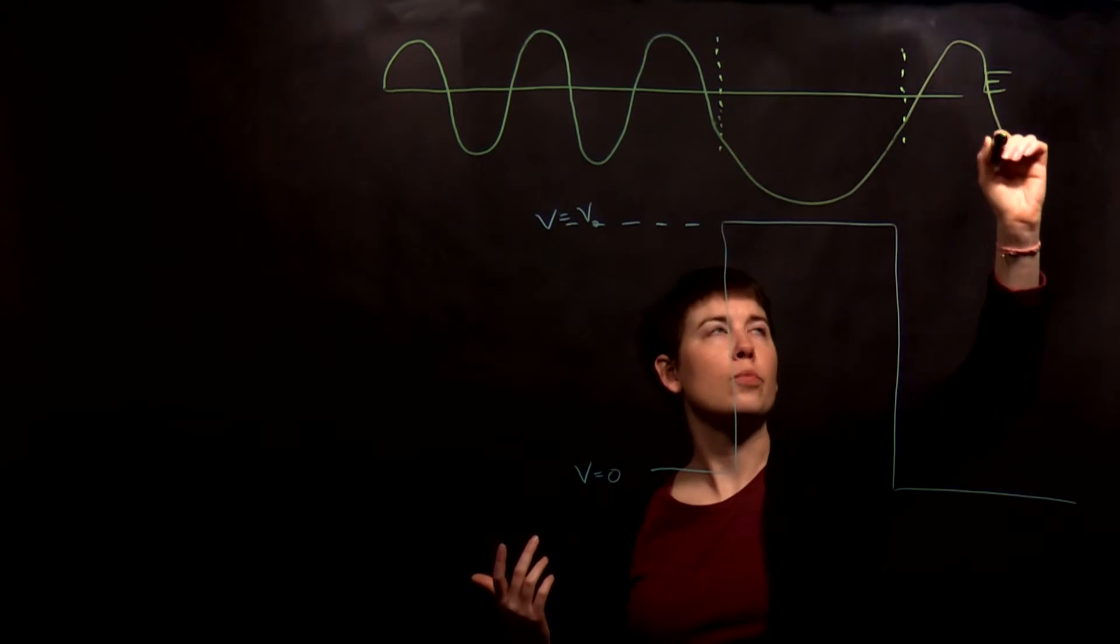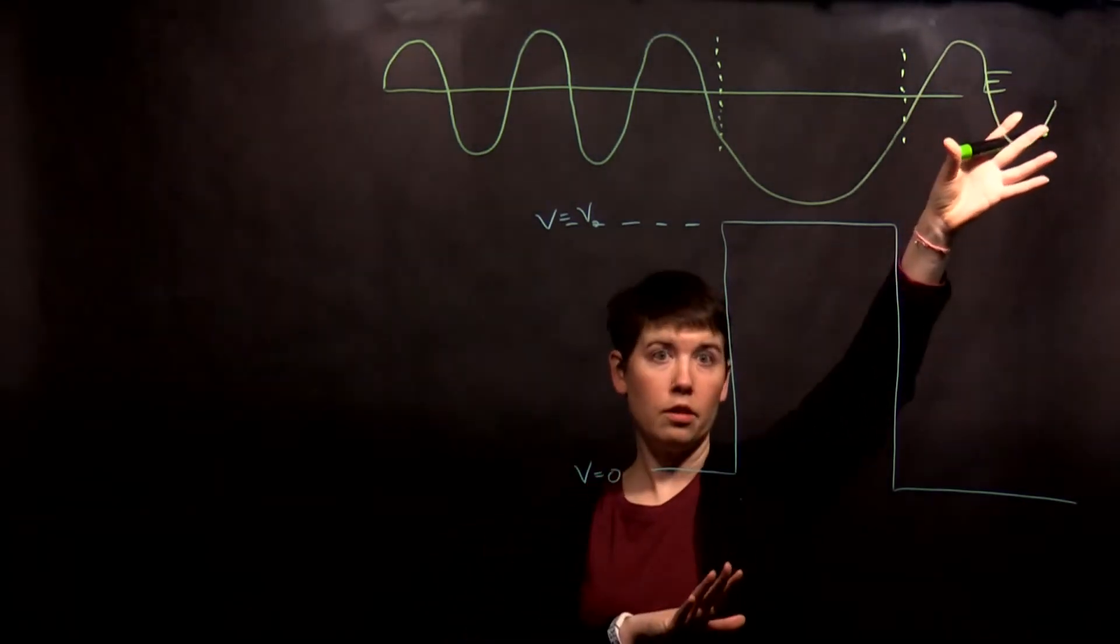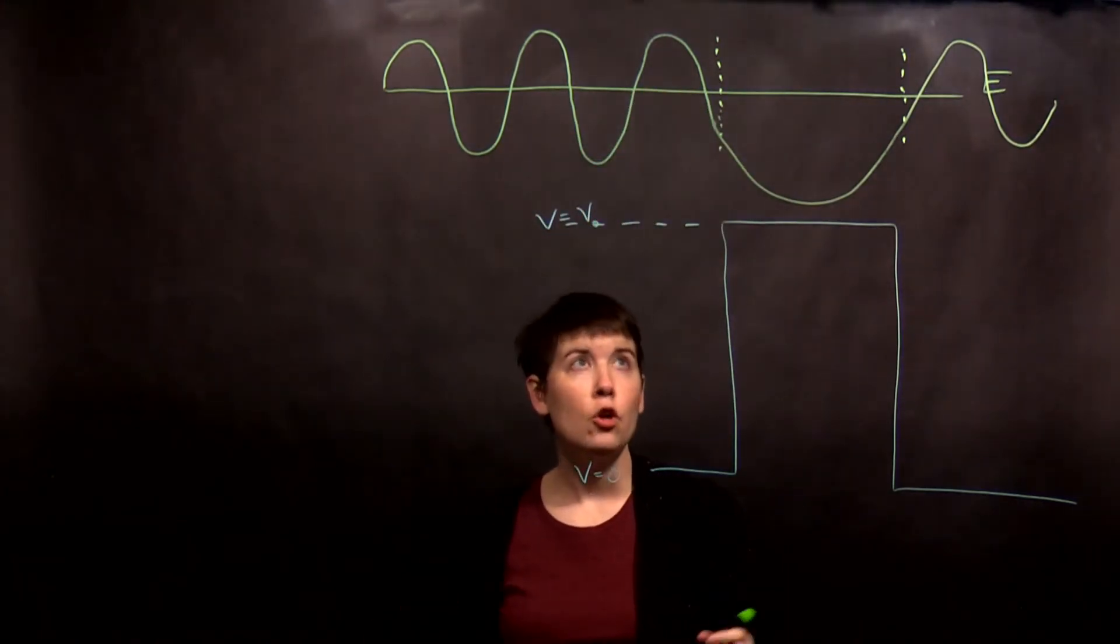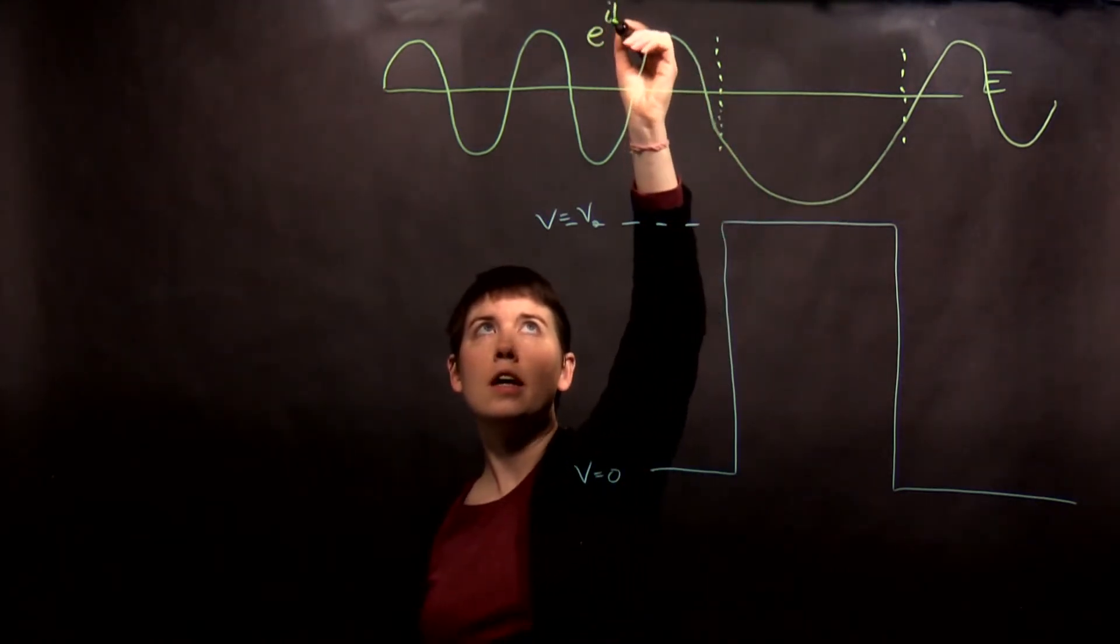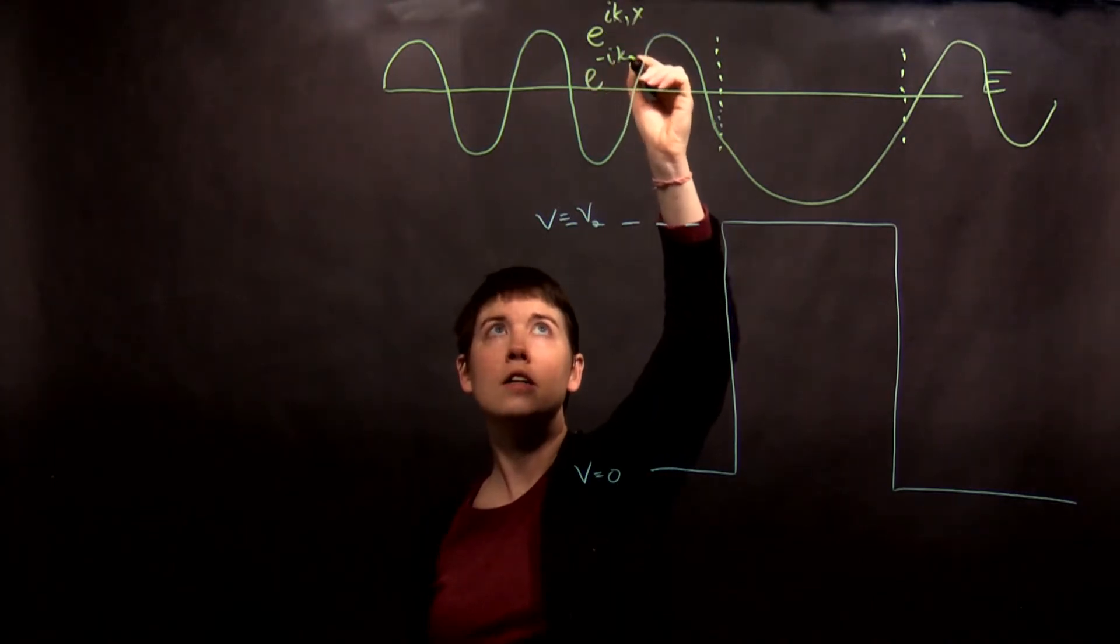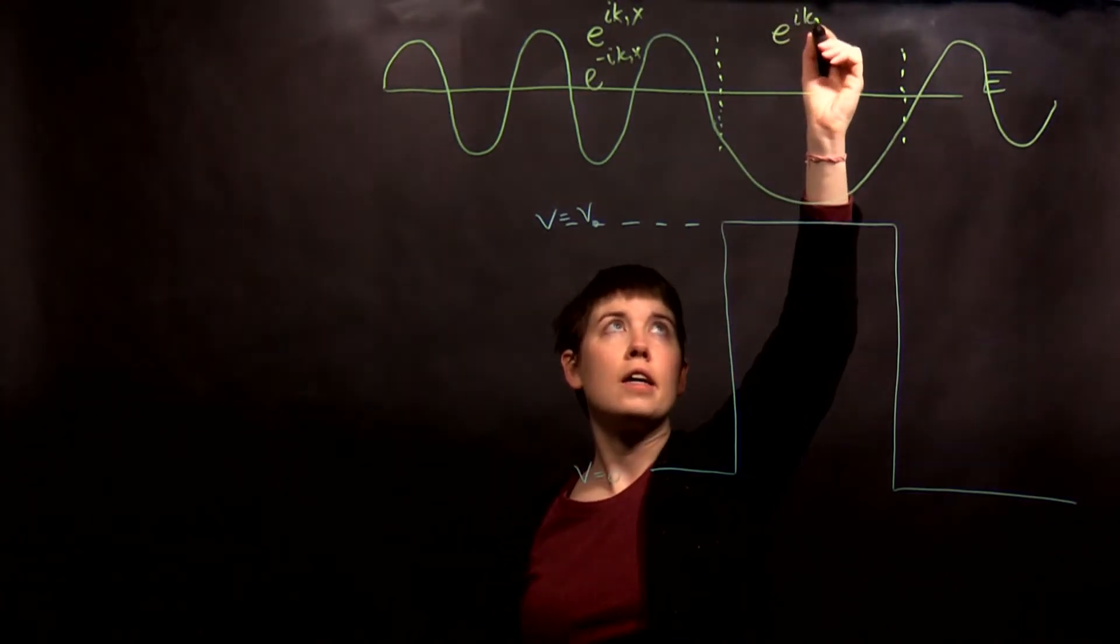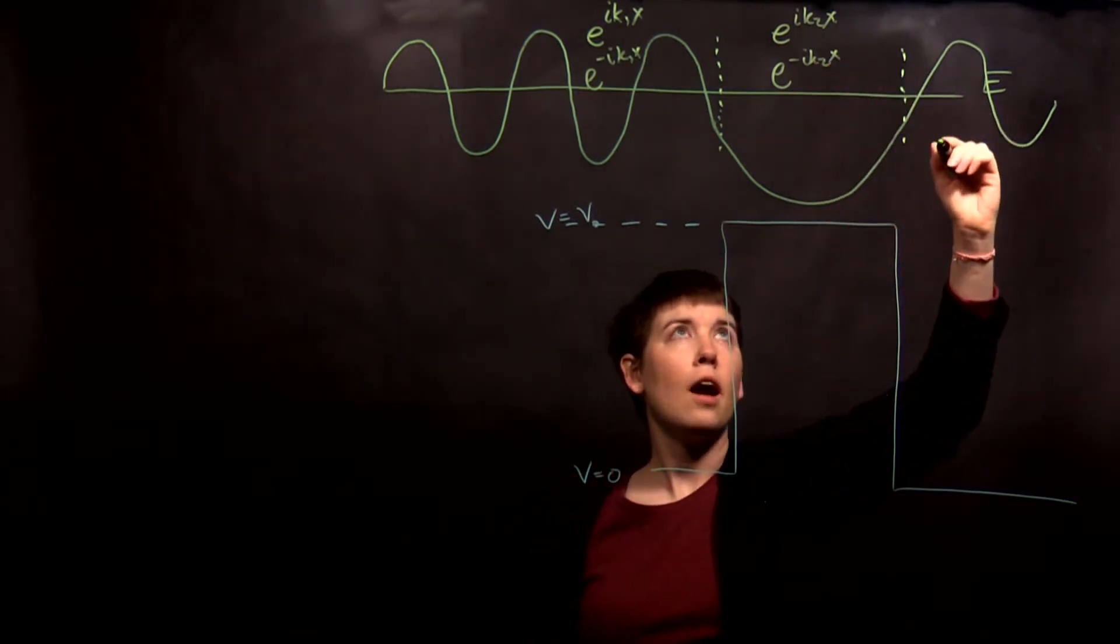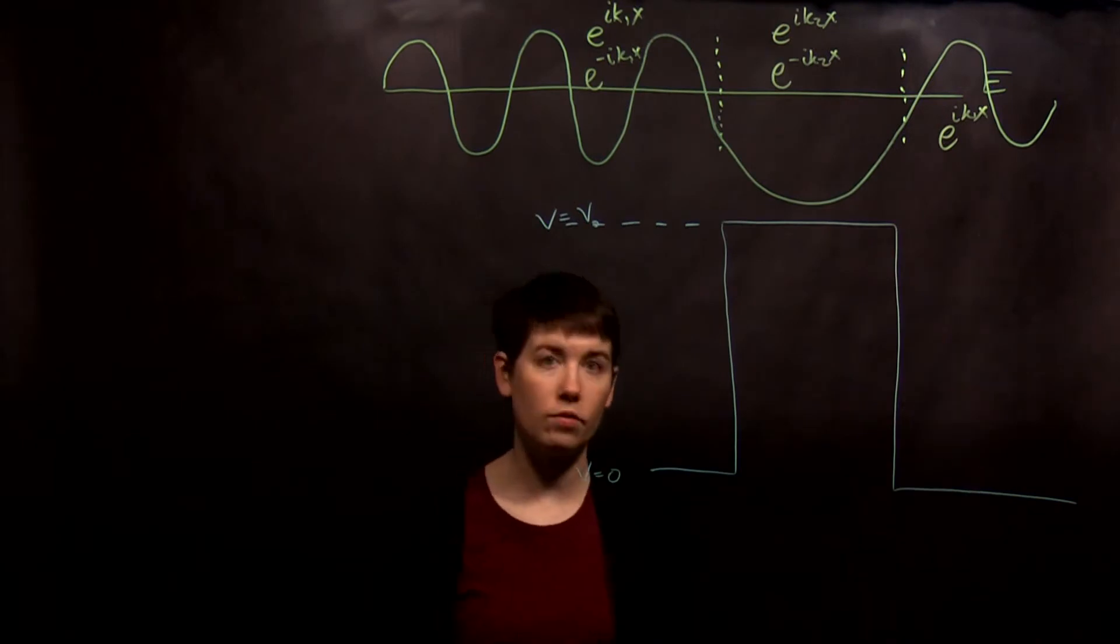And then it goes back to what it was before. So your wavelength here needs to be the same as the wavelength there. Mathematically, you're going to have effectively that e to the i k1x, e to the negative i k1x with different coefficients here, and then e to the i k2, e to the negative i k2x, which we're adding together here, and then back to e to the i k1x. And each of those would have different coefficients.